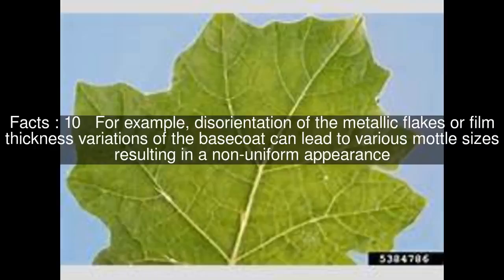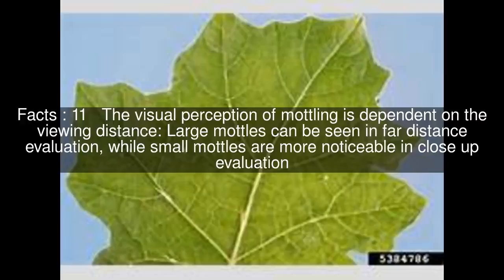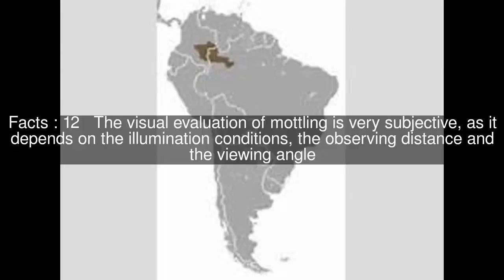resulting in a non-uniform appearance. The visual perception of mottling is dependent on the viewing distance — large mottling patterns can be seen in far-distance evaluation, while small patterns are more noticeable in close-up evaluation. The visual evaluation of mottling is very subjective, as it depends on the illumination conditions, the observing distance and the viewing angle.